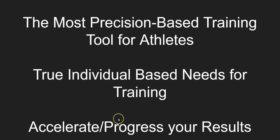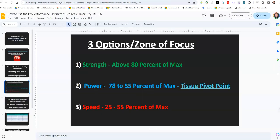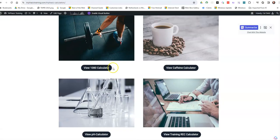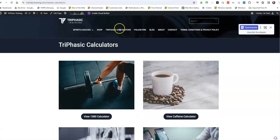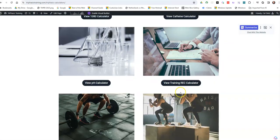Even with my most elite athletes, where it's very hard and we have to get very specific based upon what they need — when I test them, I know what their weakest link is, and this is how we do it. So go to Triphasic Calculators on the Triphasic Training website.